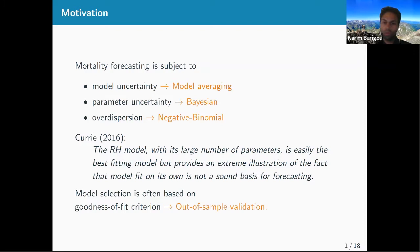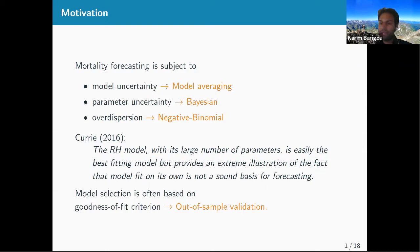What we propose in this paper is to take into account all these uncertainties. For model uncertainty, we consider model averaging — not just one model but several. For parameter uncertainty, we use a Bayesian framework, which gives a full distribution for each parameter rather than a single estimate. For over-dispersion, we consider the over-dispersed Poisson, which is the negative binomial. For model selection, we consider a holdout sample validation — looking at forecasting performance on the recent past.